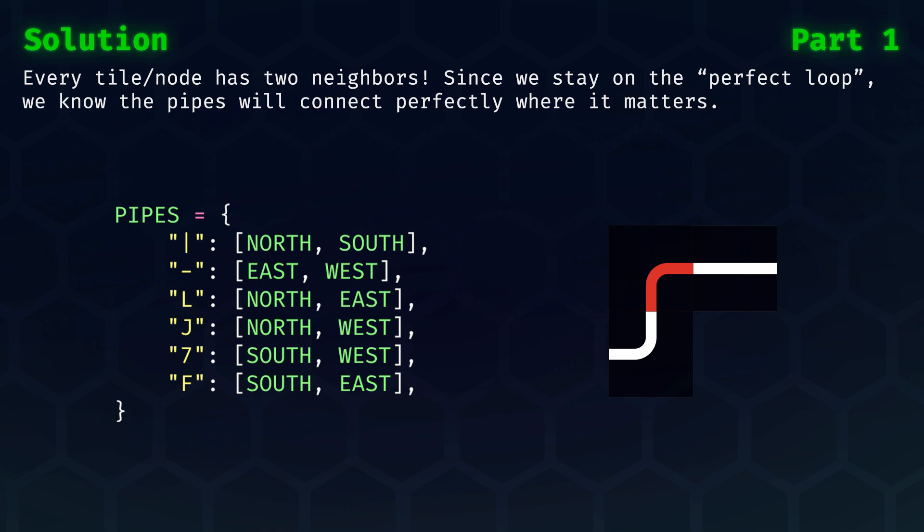Now, let's start building the graph. First up, here's a map that's the inverse of what we were using for the previous function. Now, given a pipe, what are the two directions that it connects to? In the case of the red pipe segment, which in the input would be the letter F, connects to the south and to the east.